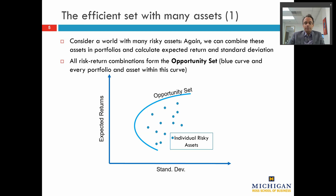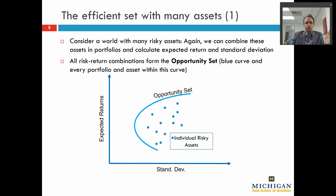These very clever researchers were trying to come up with a theory about how the market prices assets or estimates expected returns on those assets. They came up with the capital asset pricing model under a set of very limited assumptions. The idea when you are doing economic theory is that you try to collapse a very complex world into the smallest number of assumptions that you possibly can. You try to make the world as simple as possible, see what answer you get, and then incrementally relax those assumptions and make your analysis a little bit closer to reality.